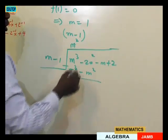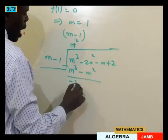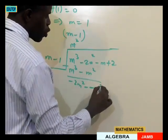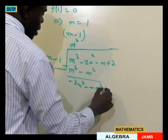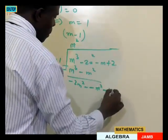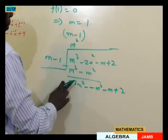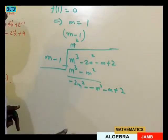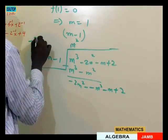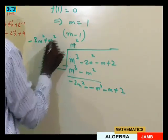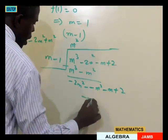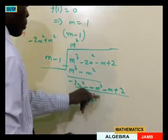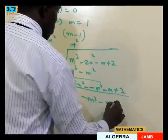After subtraction, m cubed minus m cubed cancels. We then have minus 2m squared plus m squared, giving minus m squared. Bringing down the remaining terms, we have minus m squared minus m plus 2.